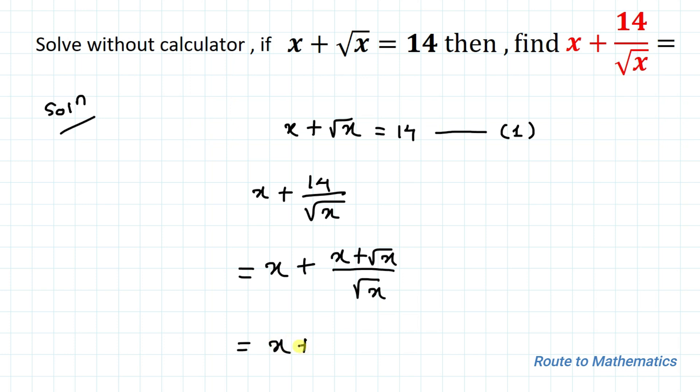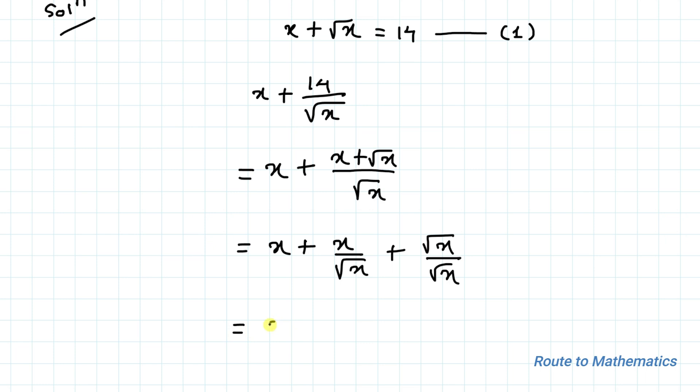This equals x plus x by root x plus root x by root x. This equals x plus... x can be written as root x multiplied with root x divided by root x, plus root x divided by root x.